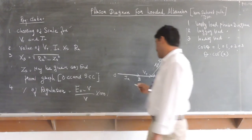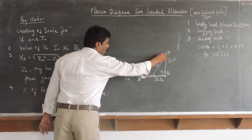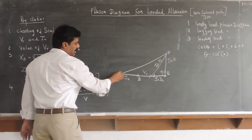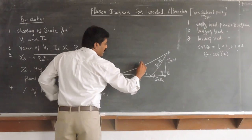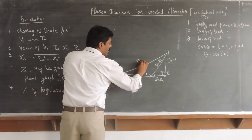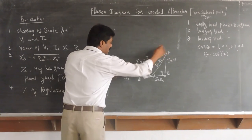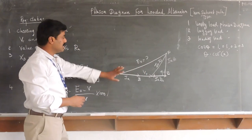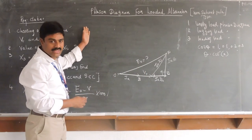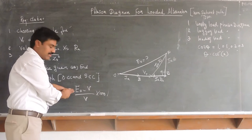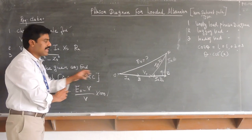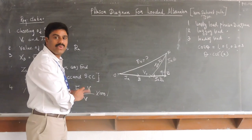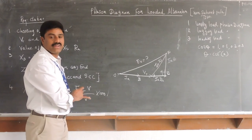And now, simply join the line OD. Now, this OD will give the value of E naught. Now, measure the length of E naught and divide by the voltage scale that you have chosen. Substitute the value directly in the formula E naught minus V over V to calculate the value of regulation. Very easy.